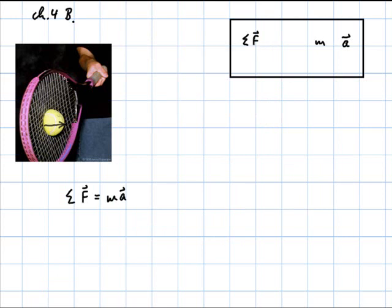This problem says when a 58 gram tennis ball is served it accelerates from rest to a speed of 45 meters per second. That's about close to 100 miles an hour. The impact with the racket gives the ball a constant acceleration over distance of 44 centimeters. What is the magnitude of the net force acting on the ball?